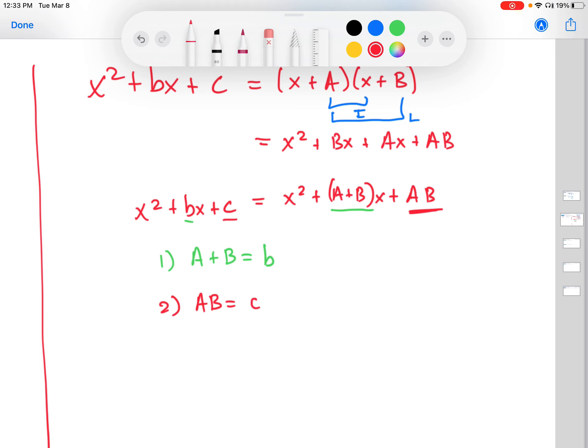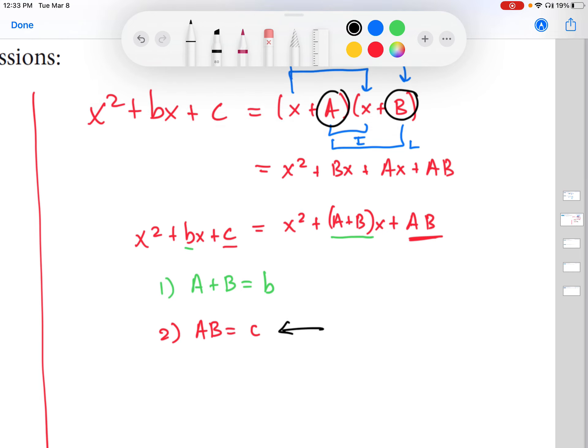So these equations look a little complicated, but let's think about what they say. This one says that the capital A and capital B we are looking for, which is going to give us our two factors of this quadratic expression, they have to multiply to the number c, which we get from looking at the quadratic expression. This expression says that capital A and capital B have to add to the little b that we pick out from the coefficient of x. So these are the two guiding principles that we're going to use to do the examples in a minute. One way that I would suggest you operationalize these principles is you start with this one first. Another way to express this would be to say that capital A and capital B are factors of little c.